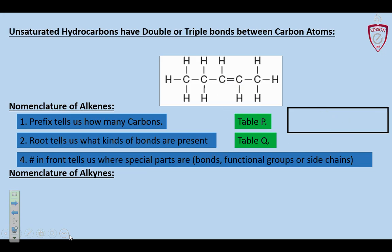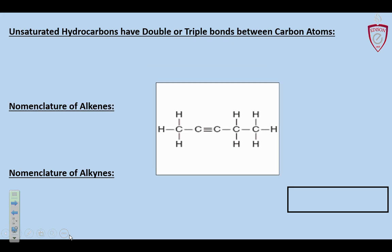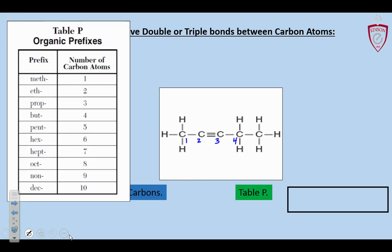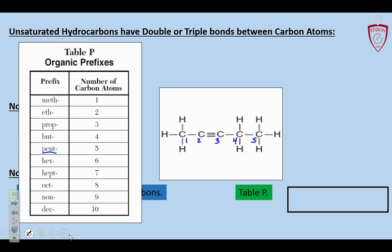So let's move on. I'll do one with an alkyne type of hydrocarbon. And the number actually comes before but we do it last in the steps. Right so same steps. Prefix tells us how many carbons. We're gonna look on table P for that so as he numbers him up. He's got five. Pent.